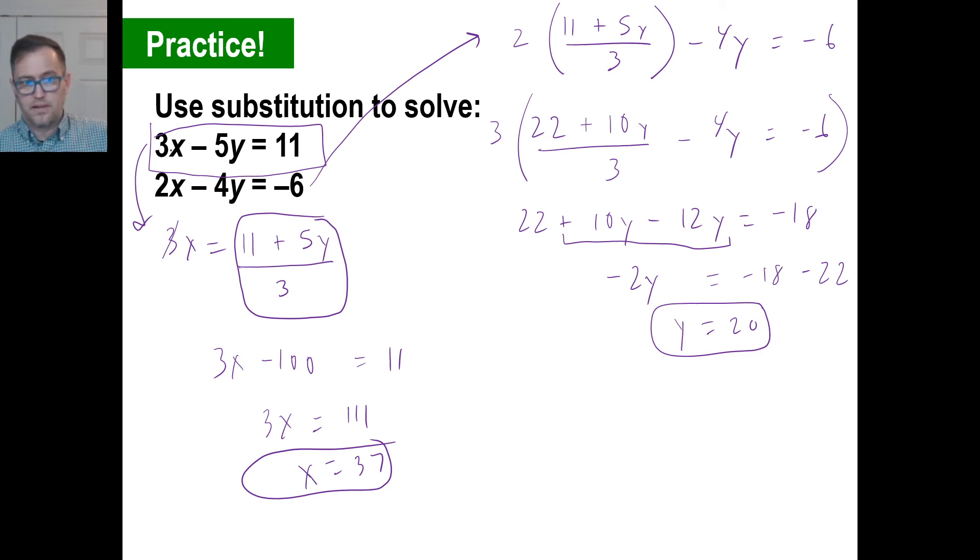So we say X is 37 and Y is 20. Well, let's just try it. 3 times X, 111 minus 100 is 11. Of course, we know that's what we used a minute ago. Let's try a different color. Let's throw things up a little bit. Let's try the second equation and see if this works. So 2 times X is 74. 37 times 2. Minus 4 times Y. Well, minus 4 times 20 is minus 80. Does that equal negative 6? Well, I'll be doggoned. Excuse my language. It does work. We got it right. That is to say, I got it right. See you guys next time.